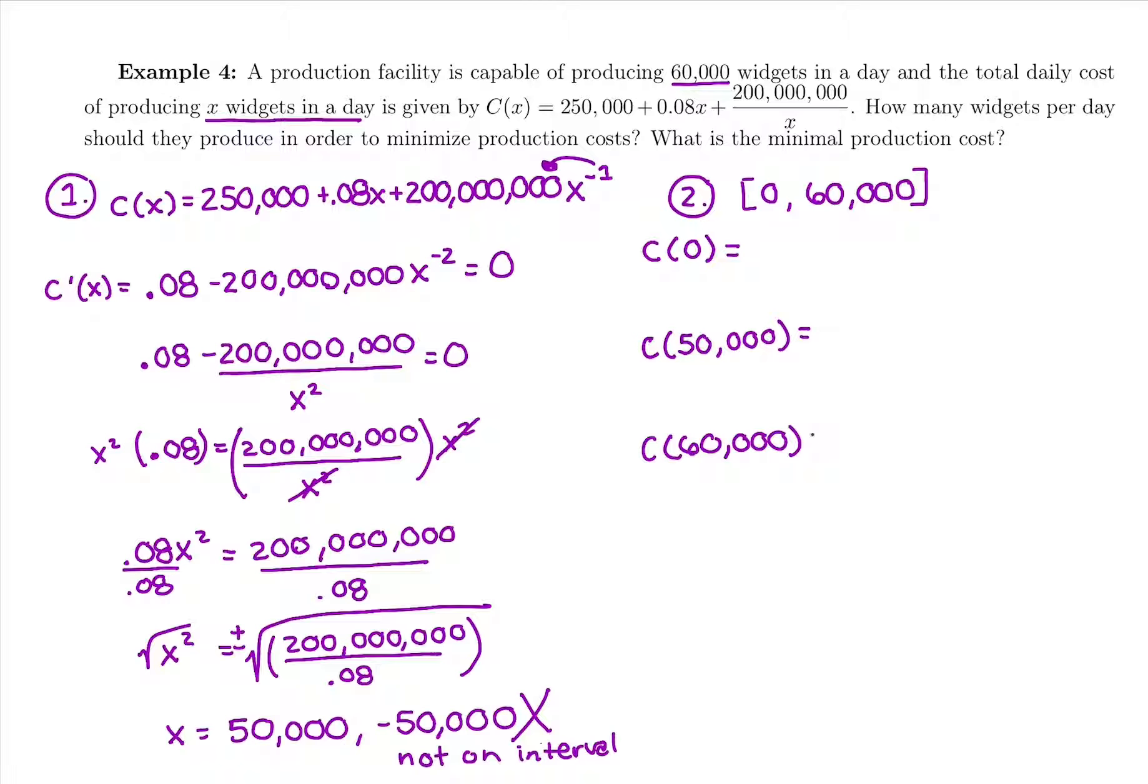Now if we plug in each of these to the original function to see what our y values are, we're going to see which one's going to minimize the cost. Plug in 0 on your calculator. You'd get 250,000 + 0.08 times 0 is 0, so so far we're at 250,000, our overhead cost. And then if we do 200 million divided by 0, what's that going to be? It's going to be an error. You cannot divide by 0. So this is actually a number you can't plug in. It's undefined. They have built their cost function in a way that they would never consider not producing something, which actually kind of makes sense. If you owned a t-shirt company, you wouldn't just wonder what would happen if we don't produce any t-shirts. That wouldn't be a great business plan. C(0) is actually undefined, which is fine. We were never going to recommend that they don't produce anything anyway.